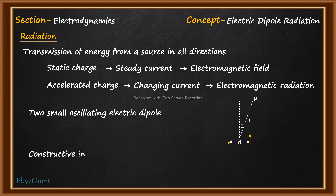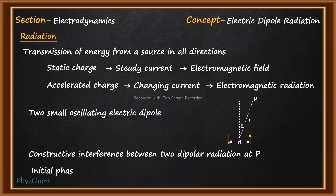As per the question, there is a constructive interference between the two dipolar radiations at point P, as shown in the figure. There is already an initial phase difference of pi between the waves. This is because the two charges are in opposing directions, so it will definitely lead to a phase difference of pi.